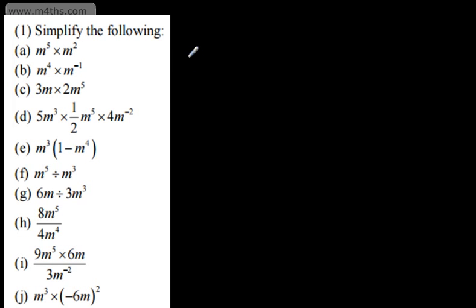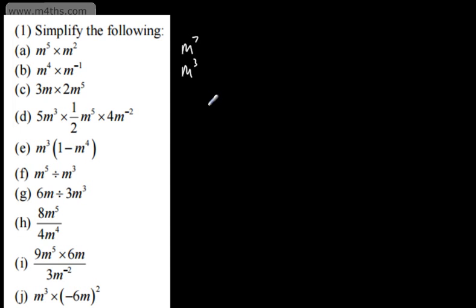Here we've got m to the power of 5 multiplied by m to the power of 2. The bases are the same, so we simply add the powers, giving m to the power of 7. Here we've got m to the power of 4 multiplied by m to the power of minus 1. So 4 plus minus 1 gives us 3, meaning we'd have m to the power of 3, or m cubed.